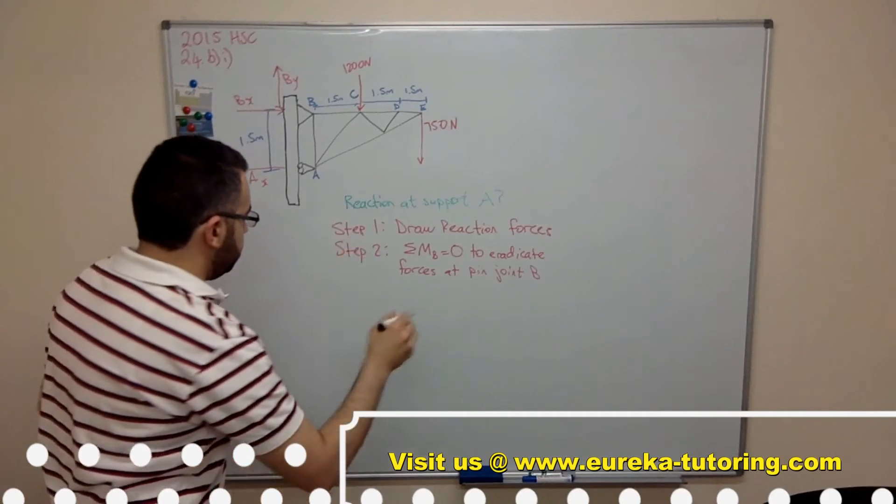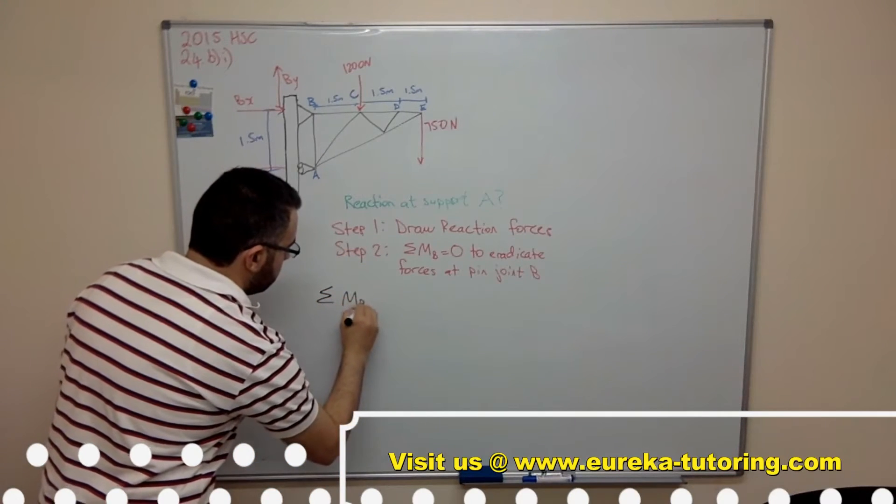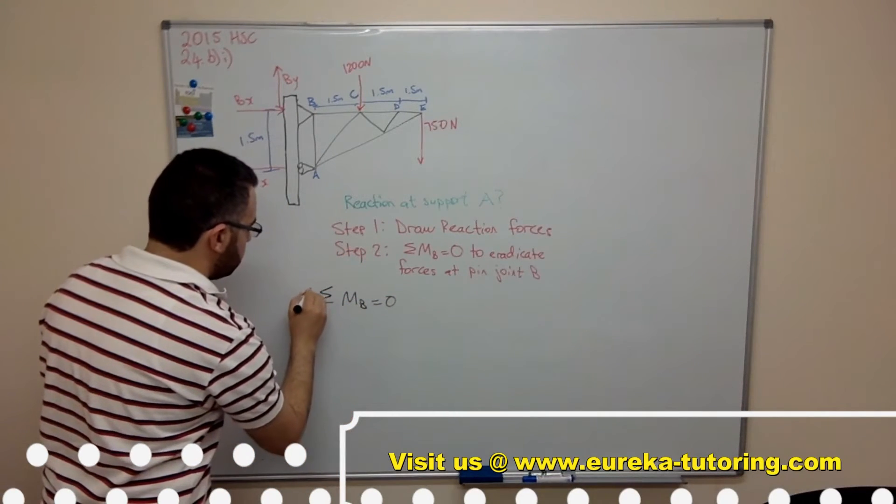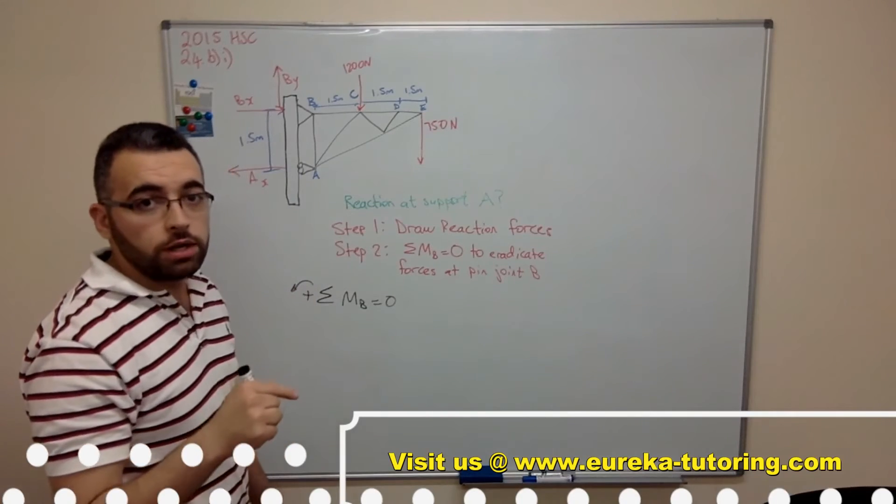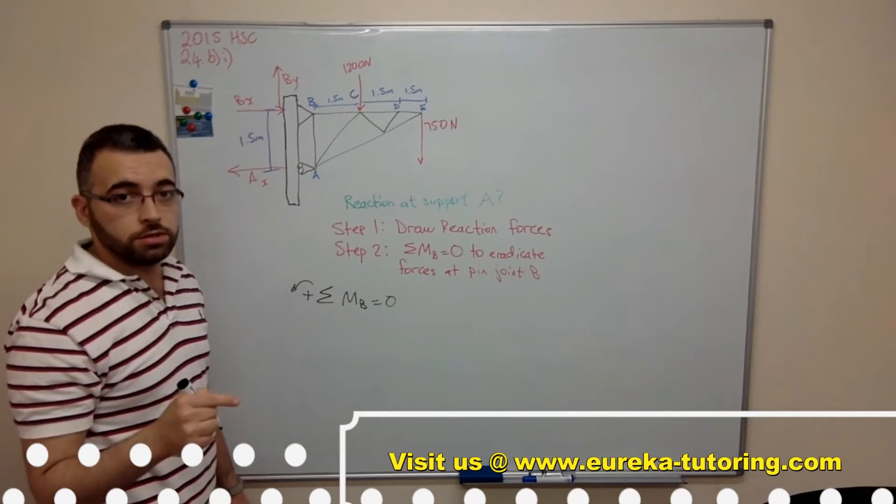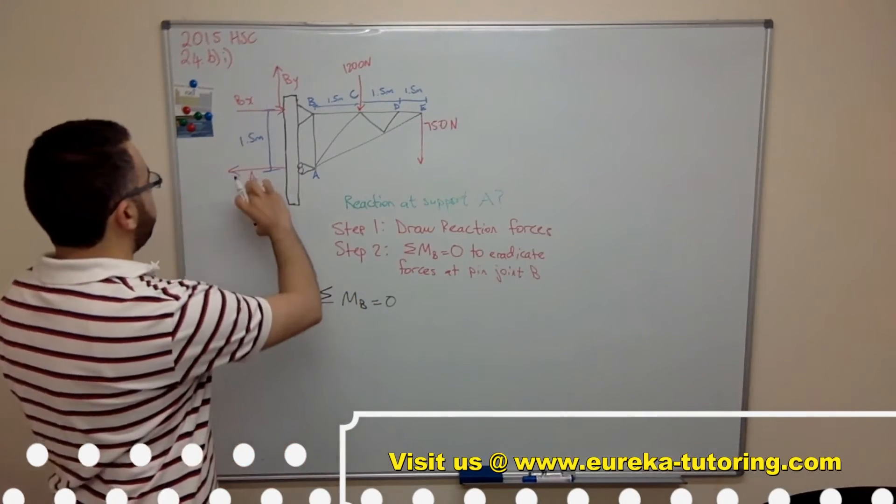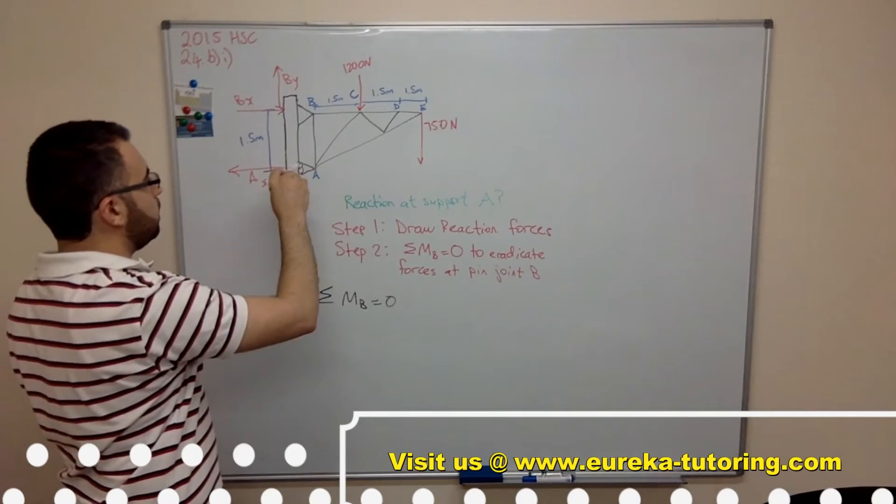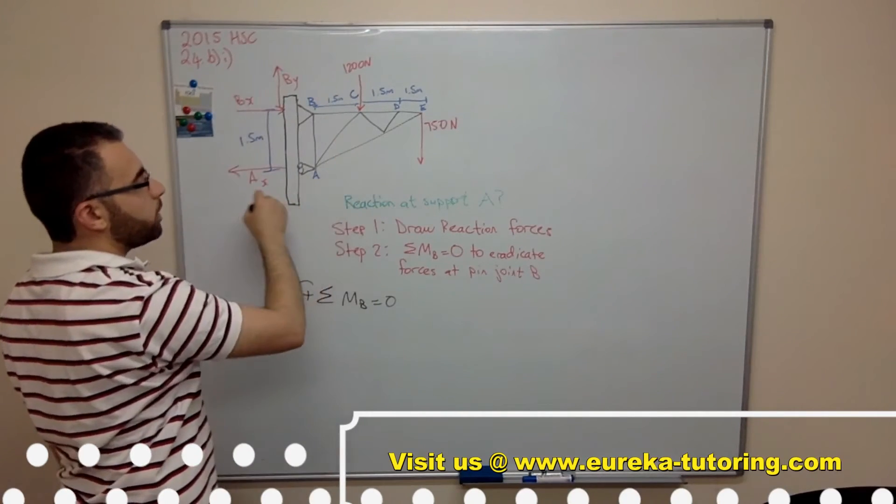So sum of moments about B equals zero and I'm going to take the anti-clockwise moment direction as my positive. So we've got this force Ax times the perpendicular distance and it's going to go in this direction.